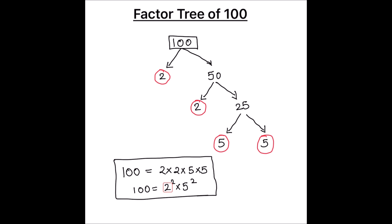One more thing to point out: there can be more than one factor tree for the same number. When we break the number into two factors, the two factors can be different each time, which makes the factor tree look different, but the prime factors and the number of prime factors remains the same.